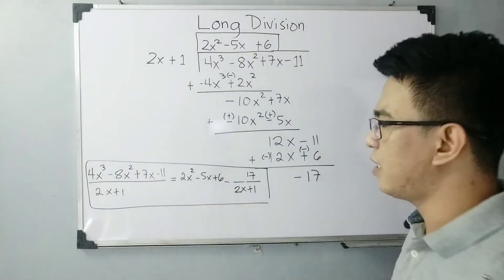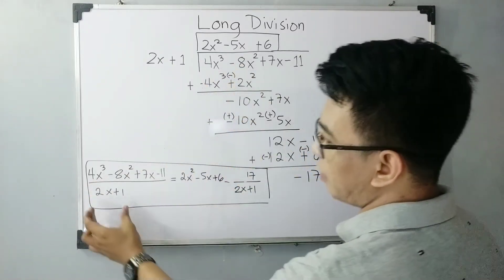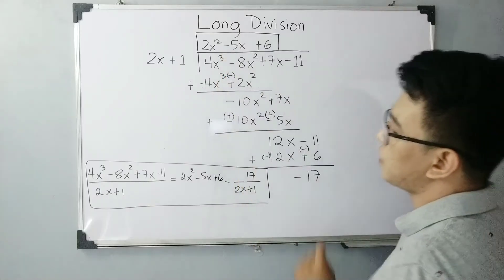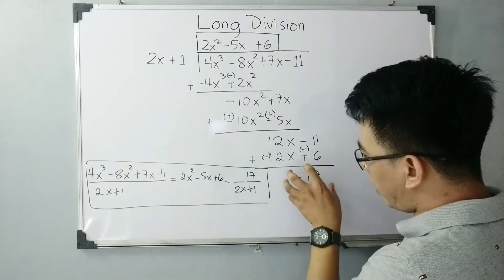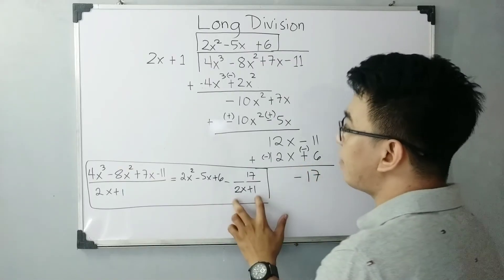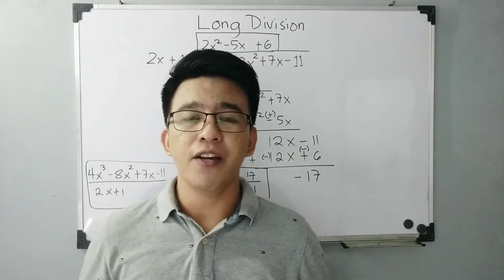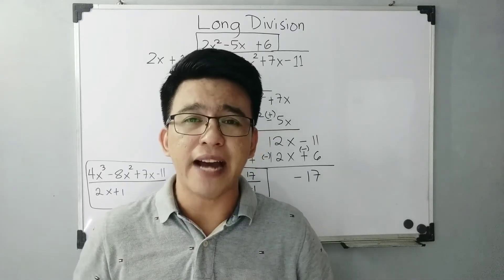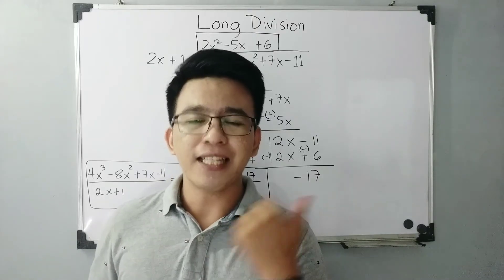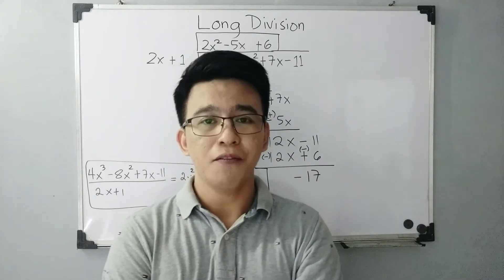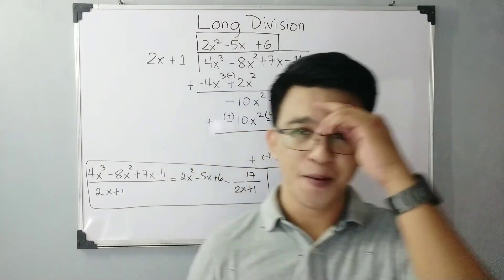Again, to express your answer: copy the given dividend over the divisor, set it equal to the quotient, which is 2x squared minus 5x plus 6, plus the remainder over the divisor. I hope you learned from this short video on how to use long division in dividing polynomials. If you're new to my channel, don't forget to like and subscribe, and hit the bell button to be updated on our latest uploads. Again, it's me, Teacher Goin. Maraming salamat. Bye-bye.